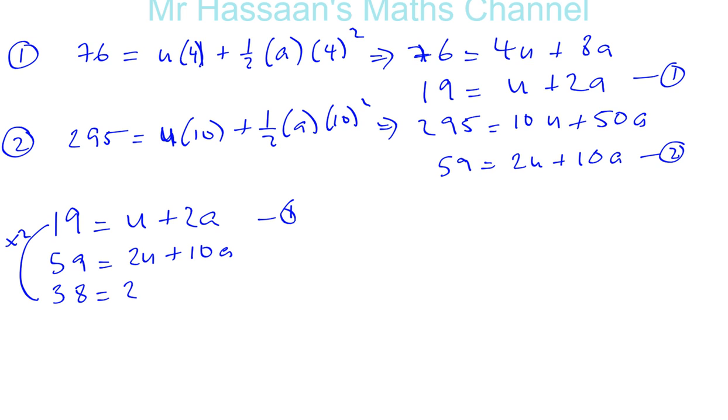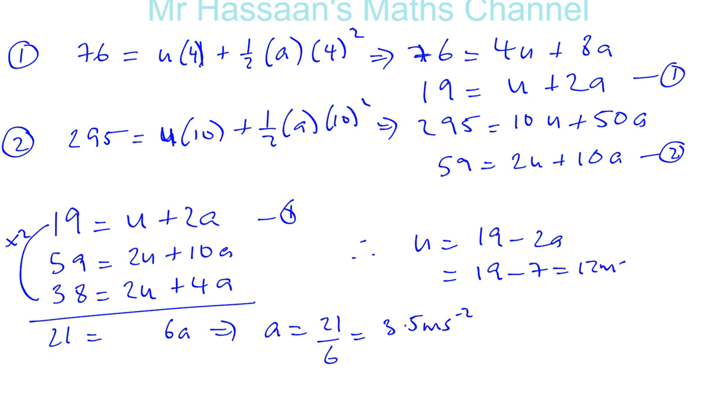So if I subtract here, I'm going to get 21. This will disappear and I'll have 6A. And from this I can say A is equal to 21 divided by 6, which is 7 over 2, which is 3.5 meters per second squared. And therefore from this equation, U is 19 minus 2A, which is equal to 19 minus 7, which is equal to 12 meters per second. So we've got our answers. A is 3.5 meters per second squared, and U is equal to 12 meters per second.